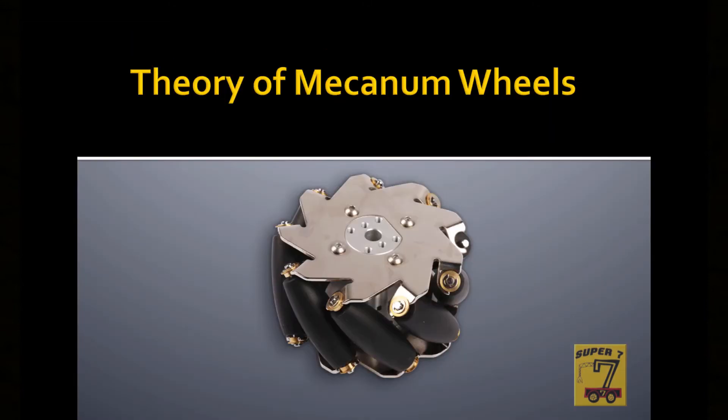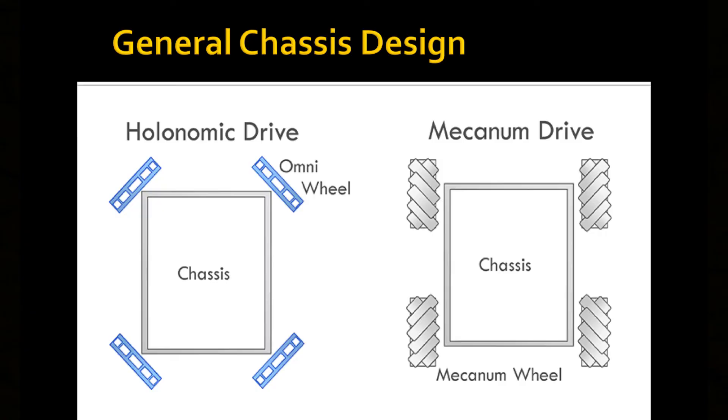First, let's talk about the theory behind the wheels. There are two general chassis designs that accomplish the same goal, a holonomic drive and a mecanum drive. In both examples, when the wheel spins forwards, it moves diagonally.